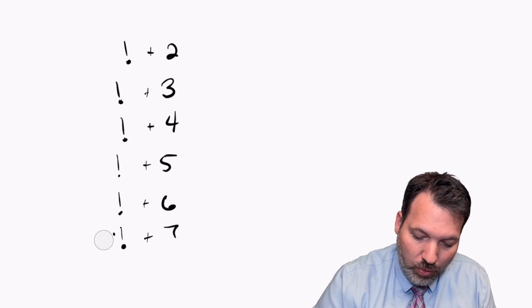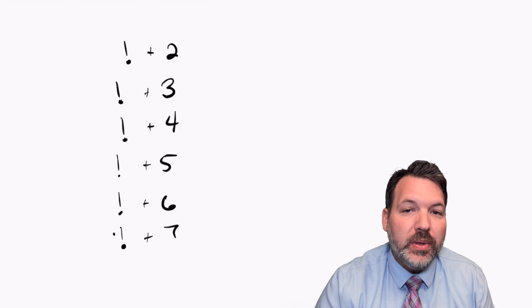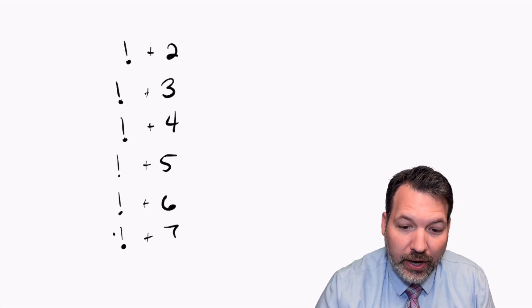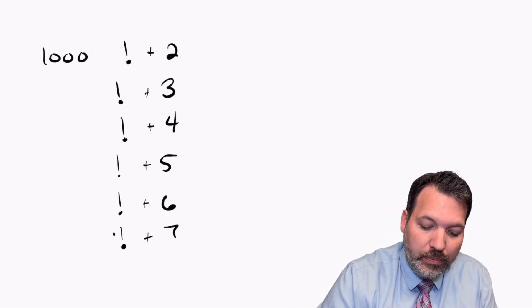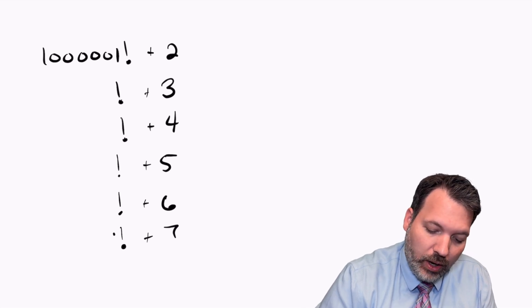You can substitute anything you want in for the factorial. For example, we could construct a string of a million composite numbers in a row guaranteed by simply using 1,001, no, that's 100,000, 1,001 factorial.